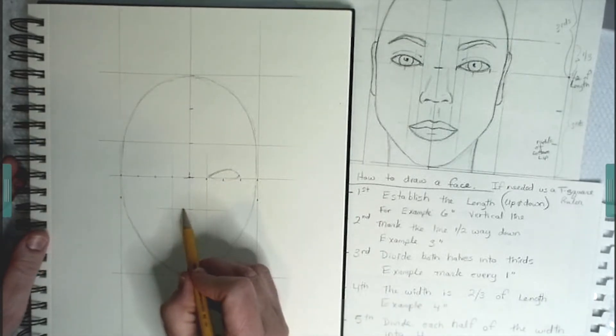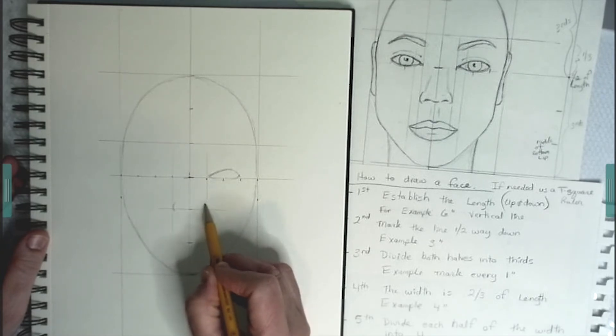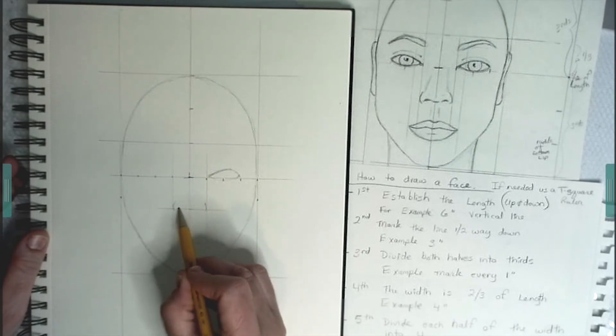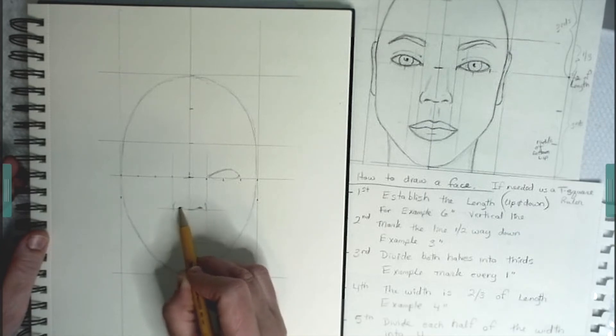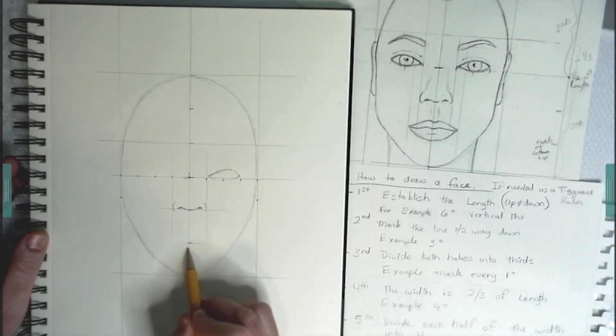And the nose. I start drawing the outer part of the nostril first. And then the inner part. Just making very light lines. This way if I don't like something I could always erase it. And it won't show up. If you make really dark lines it's harder to erase and they'll always be there.